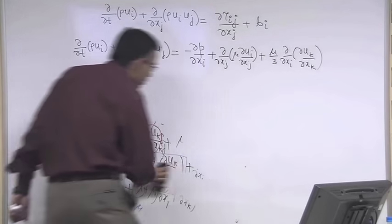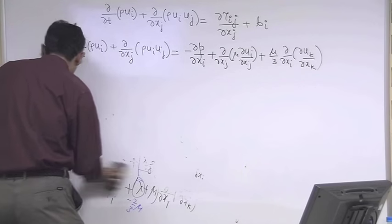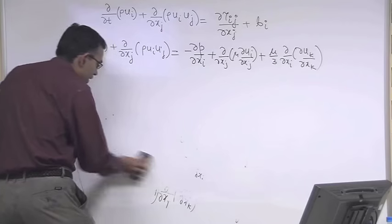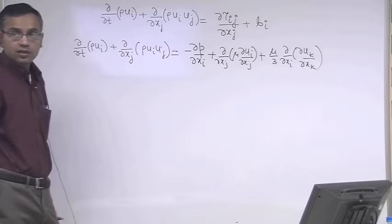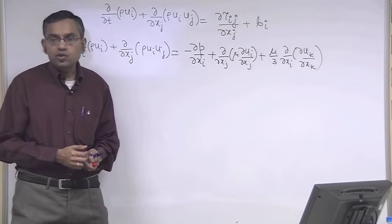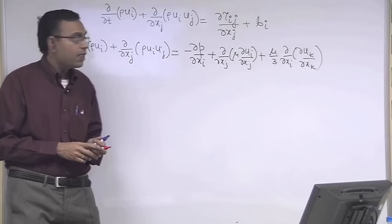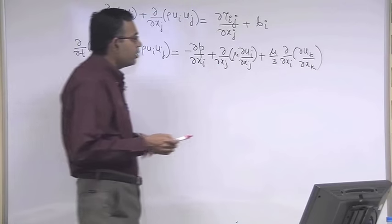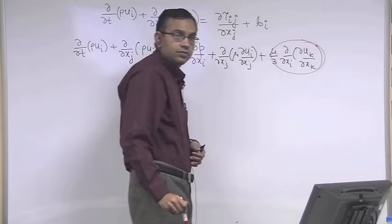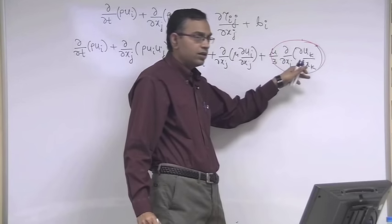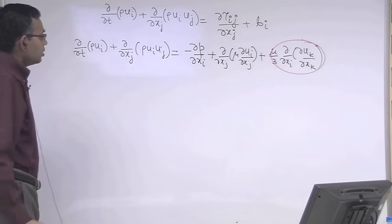This is the celebrated Navier-Stokes equation. The assumptions under which it is valid are: homogeneous, isotropic, Newtonian, and Stokesian fluid. Normally when dealing with liquids, the last term is zero for incompressible flow.